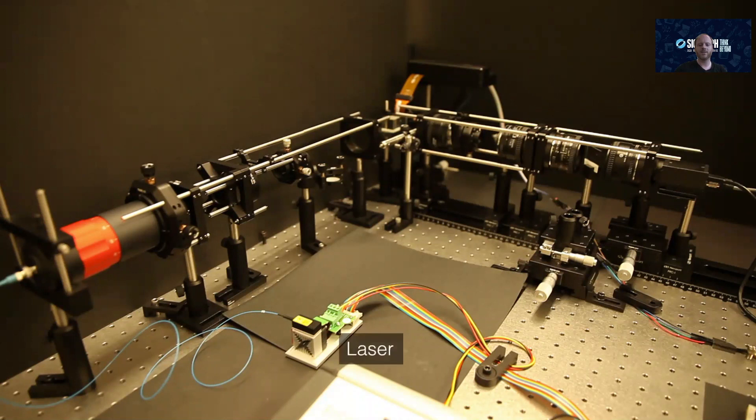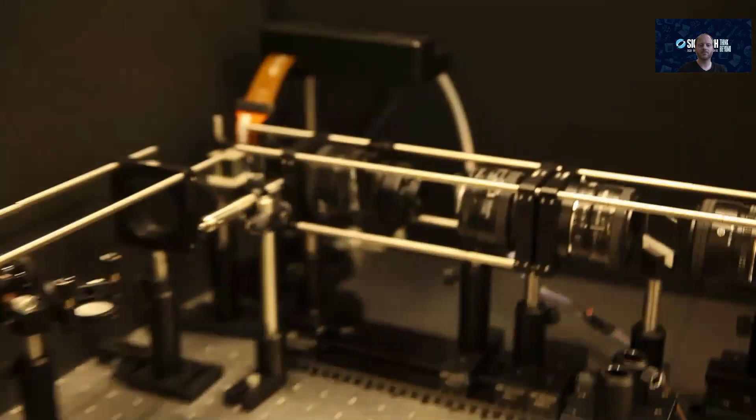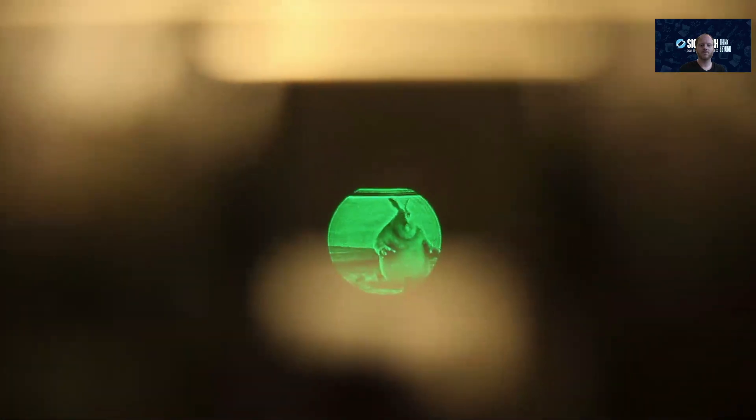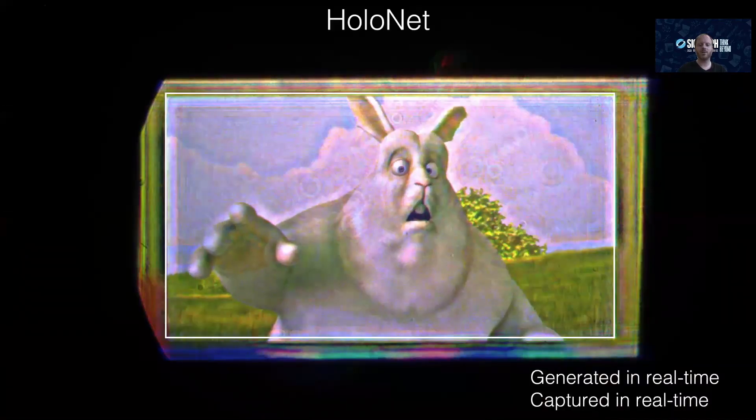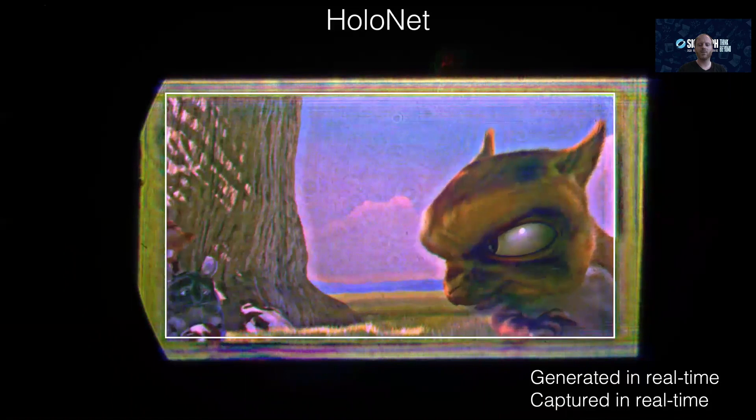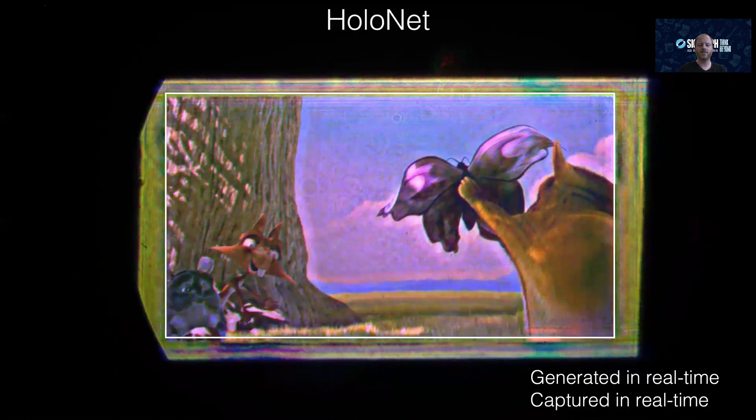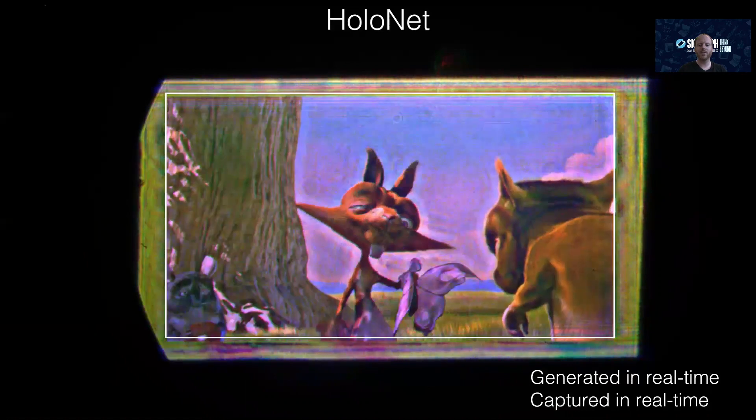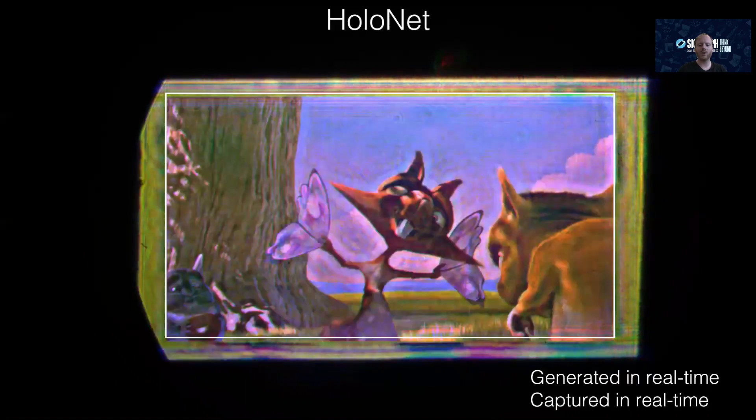What I haven't shown you yet is our prototype setup, which looks like this. There's a laser, collimating optics, an SLM, a 4F system that we use to block out some of the higher diffraction orders, and a camera to capture the results. Let's zoom in. This is a live captured result of HoloNet. The content is generated in real-time and captured in real-time. The white box illustrates the active display area. All light outside of that box is not constrained by the algorithm. Although these results are not perfect, this is probably the best real-time method anyone has shown.